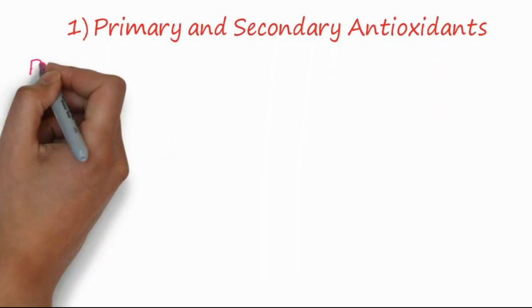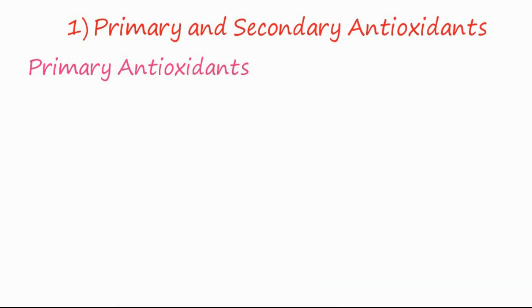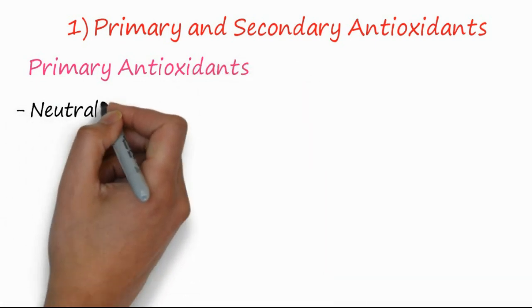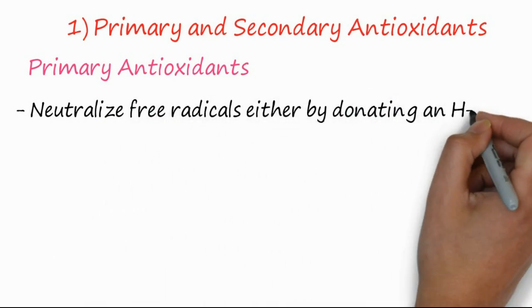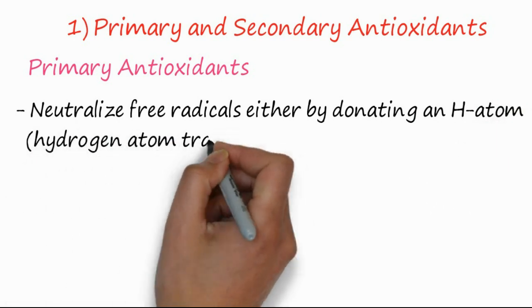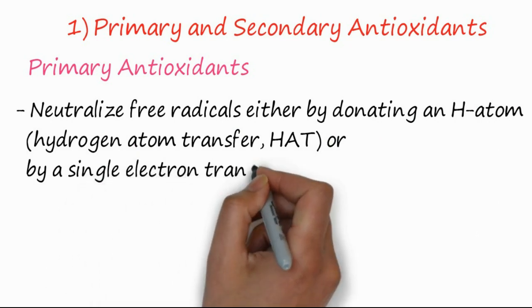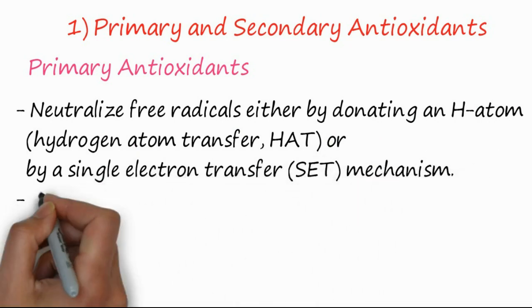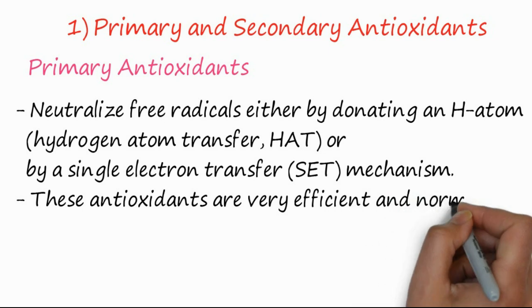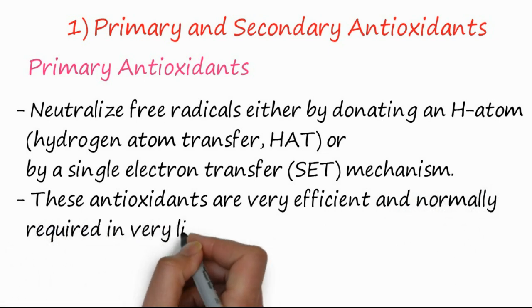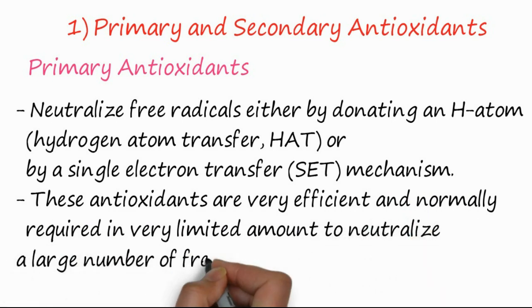The first classification is primary and secondary antioxidants. Primary antioxidants are those which neutralize free radicals either by donating a proton or hydrogen atom — simply using the HAT (hydrogen atom transfer) mechanism — or by a single electron transfer (SET) mechanism. These antioxidants are very efficient and normally required in a very limited amount to neutralize a large number of free radicals.